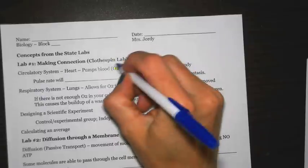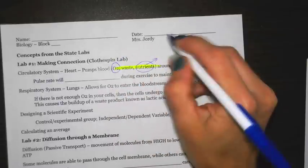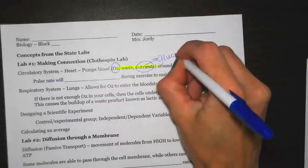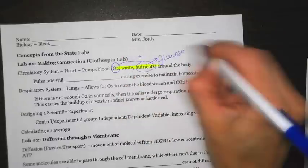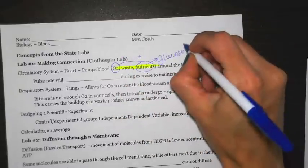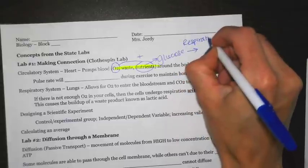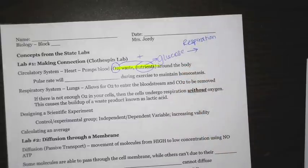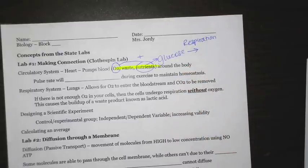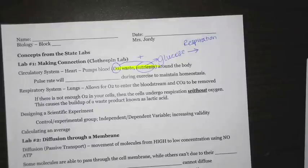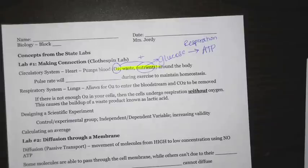For oxygen and nutrients — remember, an example of a nutrient is glucose — when you have oxygen and nutrients, that's going to allow your body to undergo respiration. Not respiration as in breathing in oxygen and exhaling carbon dioxide, but respiration on the cellular level. The products of that reaction are going to be ATP, carbon dioxide, and water. ATP is a form of usable energy — that's the energy your cells use to power chemical reactions occurring inside of them.